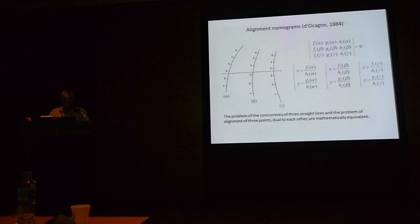In 1884, d'Ocagne observes that the problem of the concurrency of three straight lines and the problem of the alignment of three points are dual to each other and are mathematically equivalent. Through a projective transformation, the concurrent straight line abaque becomes an alignment nomogram following new terminology introduced by d'Ocagne. After that, the science of graphical tables was called nomography. Alignment nomograms were quickly adopted by many engineers for the benefit of the most diverse applications. At the turn of the 20th century, nomography was already an autonomous discipline well established in the landscape of applied sciences.